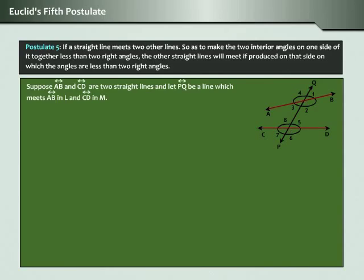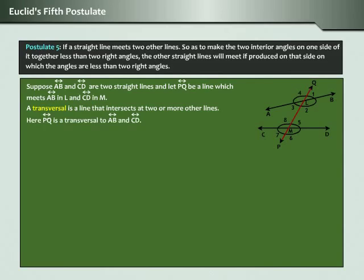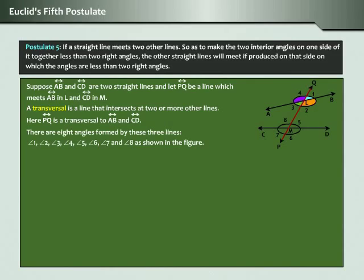Suppose line AB and CD are two straight lines and let PQ be a line which meets AB in L and CD in M. A transversal is a line that intersects two or more other lines. Here PQ is a transversal to lines AB and CD. There are eight angles formed by these three lines: angle one, angle two, angle three, angle four, angle five, angle six, angle seven, and angle eight, as shown in the figure.